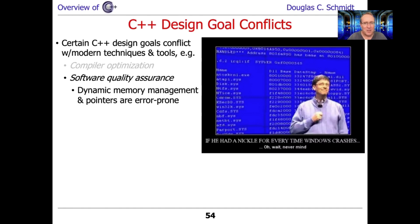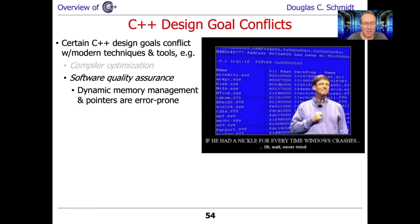Other conflicts have to do with modern perspectives on ensuring software quality. Anytime you can dynamically allocate memory and have to manage it explicitly, that is just a recipe for disaster. There's a meme showing Bill Gates — if only he had a nickel for every time Windows crashes. To be fair, Windows is much more stable these days, but there was a time when it was full of bugs and blue screen of death problems, and a lot of those problems stem from dynamic memory management.